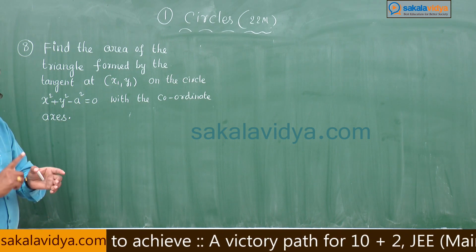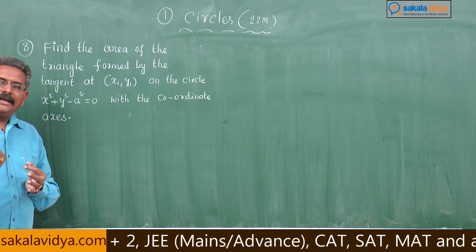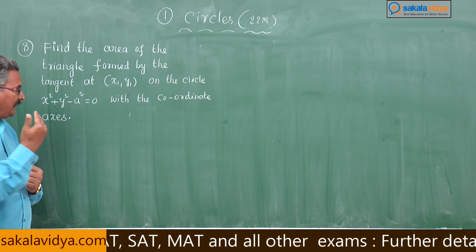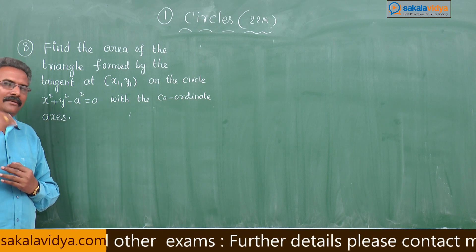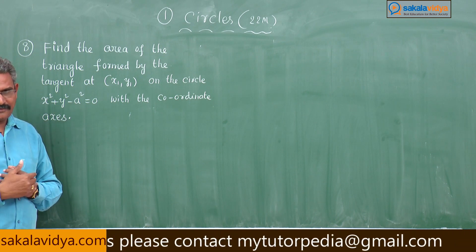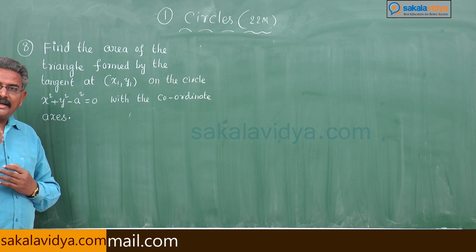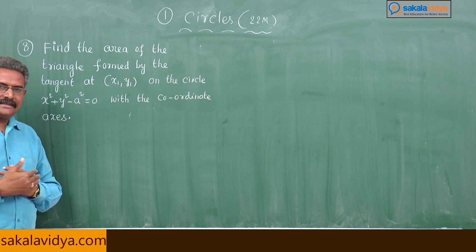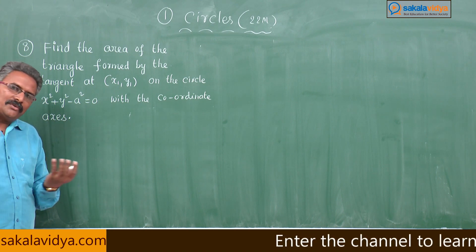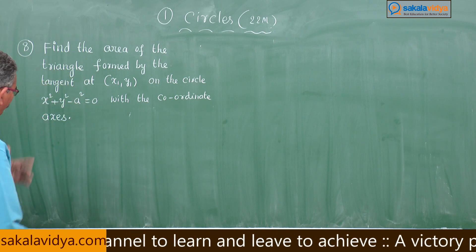After that, find the x-intercept and y-intercept made by the line on the coordinate axis. After that, the area formed by any line with the coordinate axis is given by half times c² divided by ab. So, the same method we can adopt. First, let us find out the equation of the tangent.